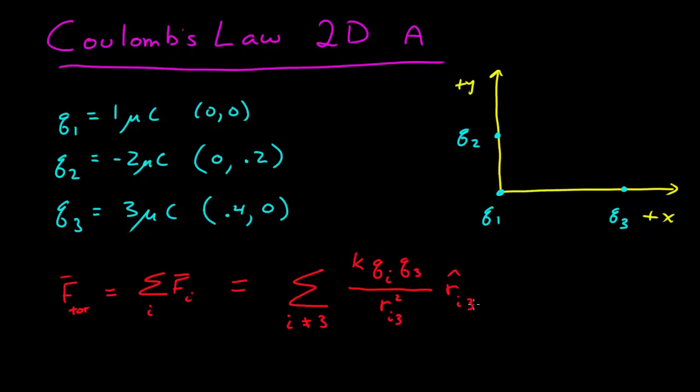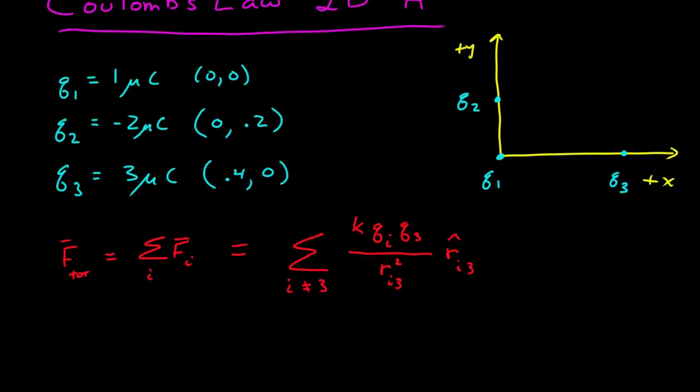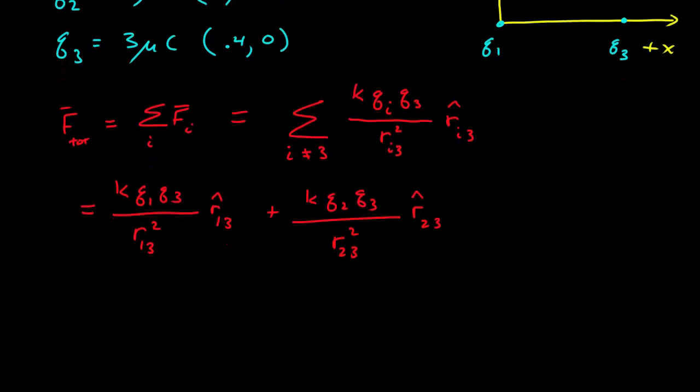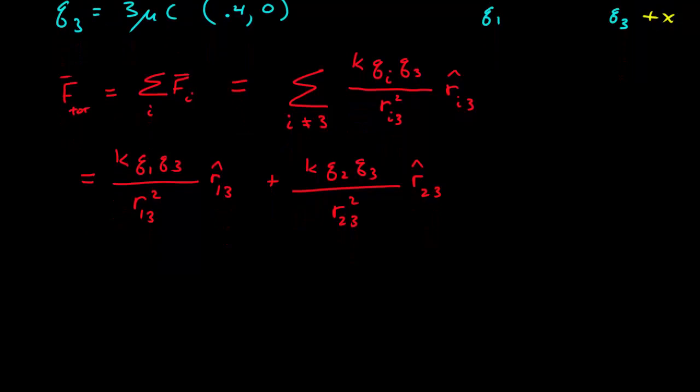To solve this, I need to find all the terms and then the appropriate vectors. Let's expand this out. We only have two terms here. So we have k q1 q3 over r13 squared times r13 hat, plus Coulomb's constant times q2 q3 over the distance between 2 and 3 squared, times the unit vector pointing from 2 to 3. To solve this, we need to find these vectors r13 and r23.